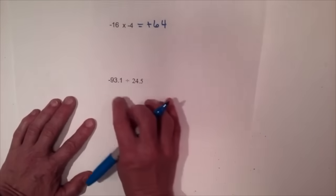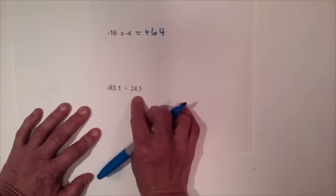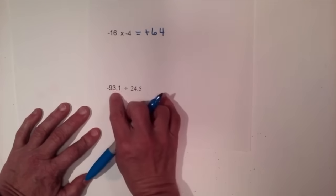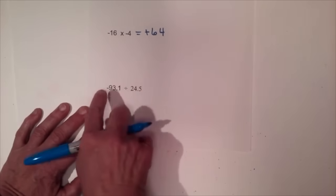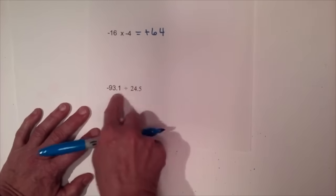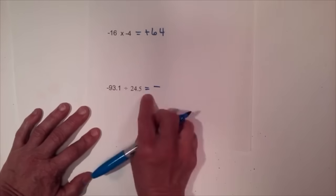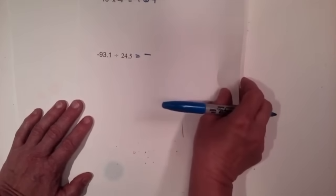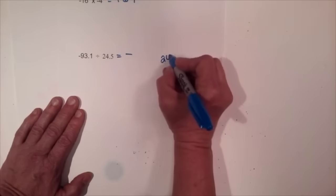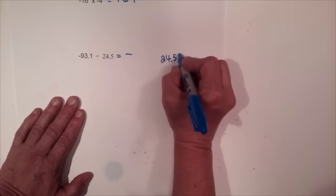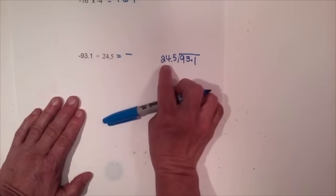Now let's look at division. We've got a negative divided by a positive. A negative divided by a positive is a negative, because negative values always come in pairs — if you have a negative and a positive, the other term must be negative when multiplying and dividing. So my answer's going to be negative. Now I'm going to long divide, putting twenty-four point five on the outside and ninety-three point one on the inside.